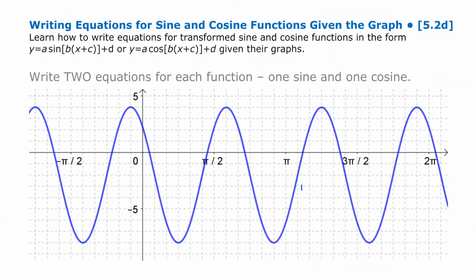We're going to write equations for a couple of different trig functions, and the structure of the equations we're going to write is our standard form, where we need to work out an a value, a b value, a c value, and a d value — the four different transformations that may have happened to the graph: horizontal and/or vertical compression, horizontal and/or vertical translation.